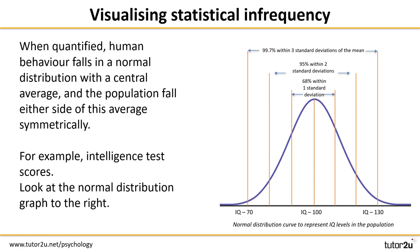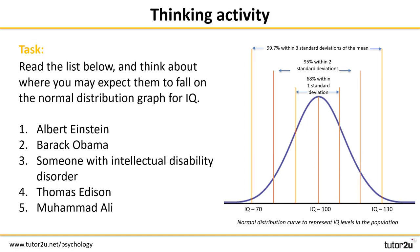According to this definition, approximately five percent of the population have an IQ score that is more than two standard deviations away from the average of 100. For example, someone with an IQ score of less than 70 would be statistically rare, and someone with an IQ of more than 130 would also be statistically rare. Anyone with an IQ score of less than 70 or more than 130 will be regarded by this definition as abnormal.